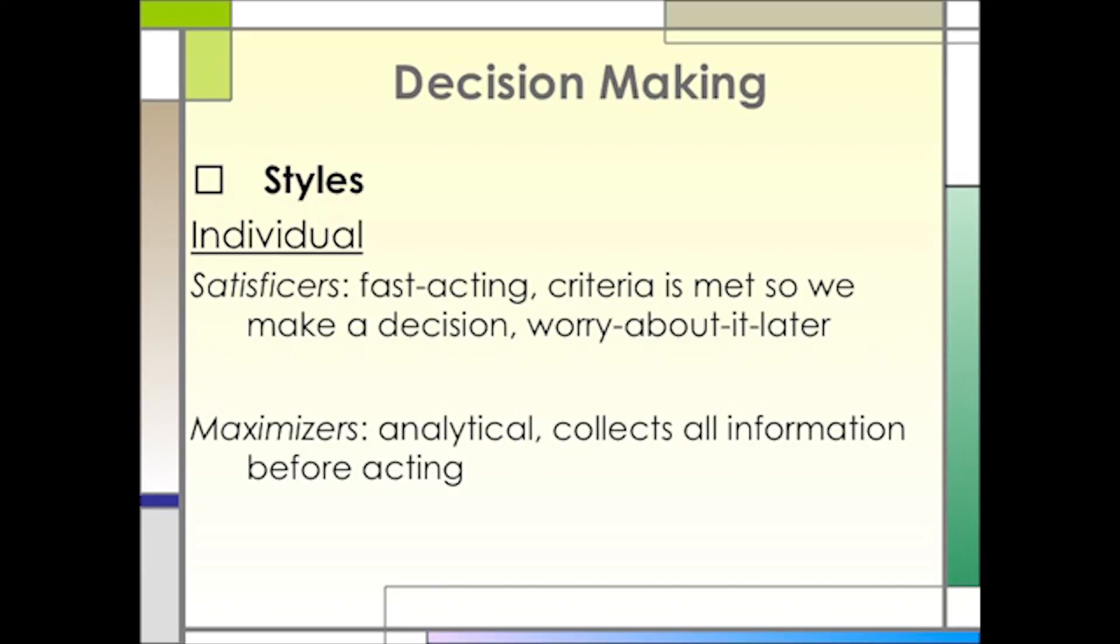Individuals may be satisficers or maximizers. Satisficers are fast acting, they consider whether the criteria are met at the minimum level, and then when it is, they act and they worry about the results later. Maximizers, on the other hand, move more slowly. They collect all the information possible and analyze it before moving forward. The big question here is, which are you? It is critical to know this before it is time to make decisions, so you have a better understanding of how you will react.